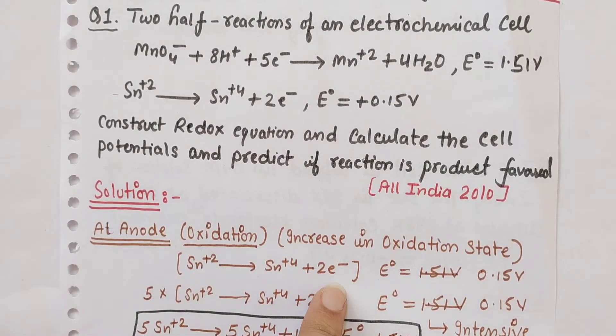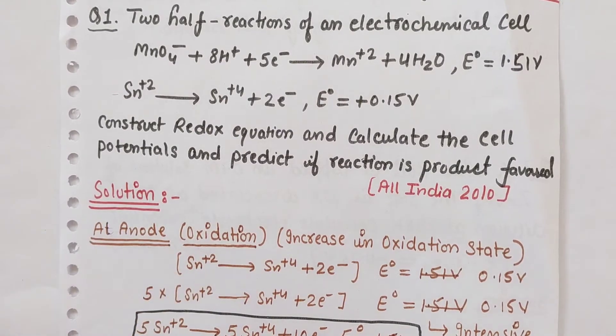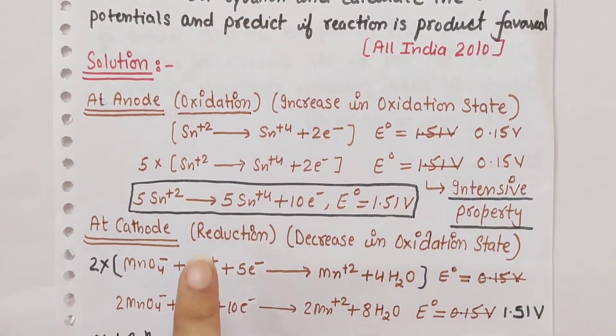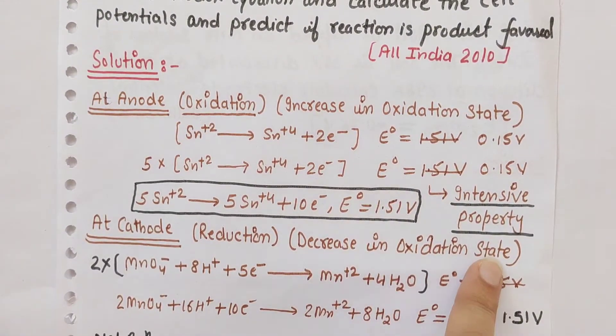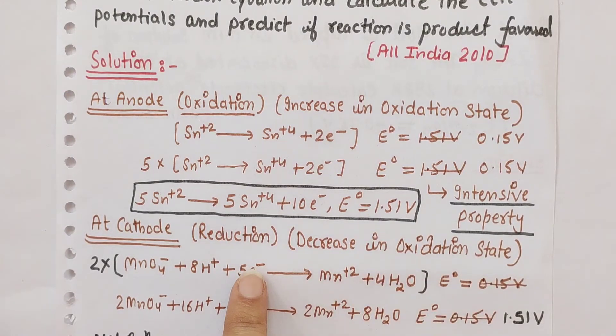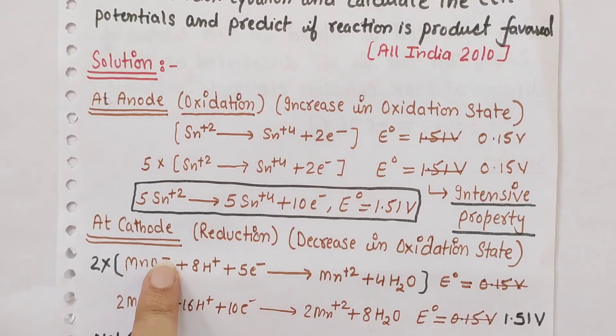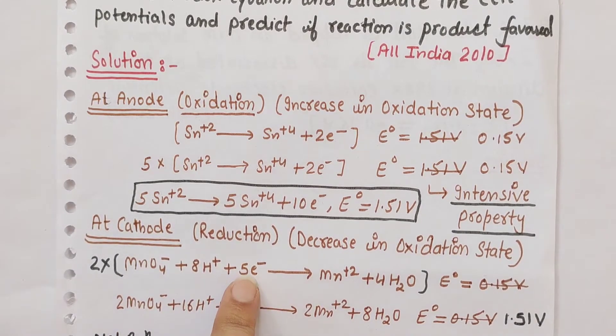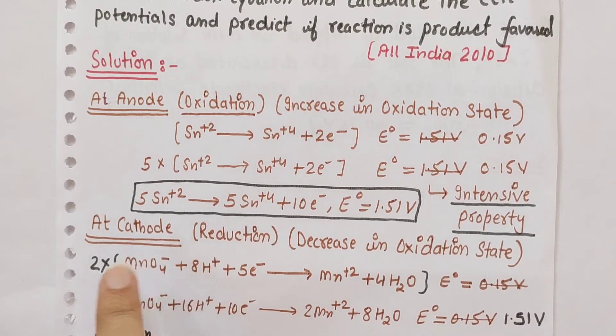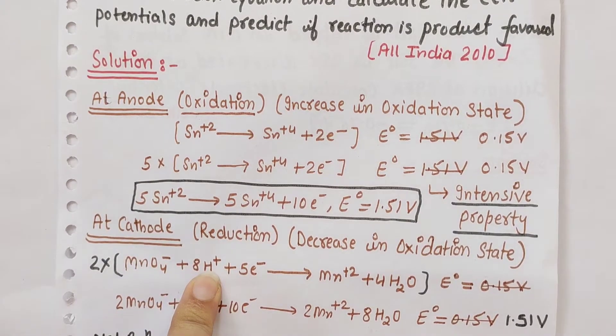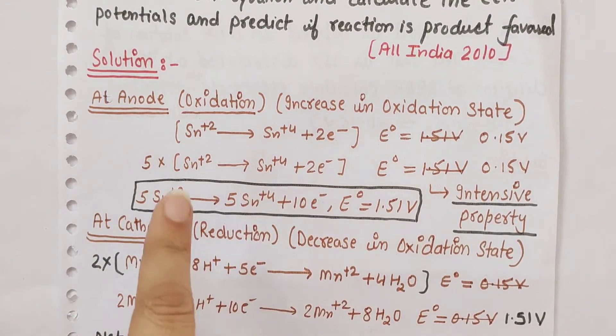At cathode, reduction occurs - decrease in oxidation state or gain of electrons. The MnO₄⁻ equation where 5 electrons are gained is the cathode reduction reaction. So these half reactions go at anode and cathode respectively.